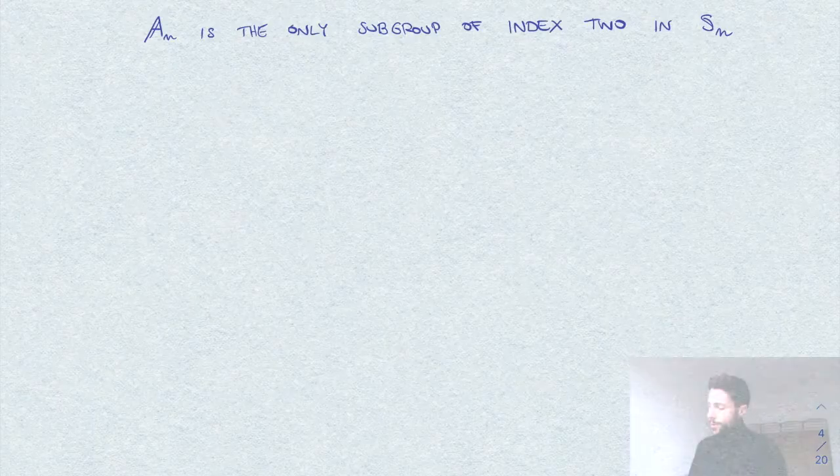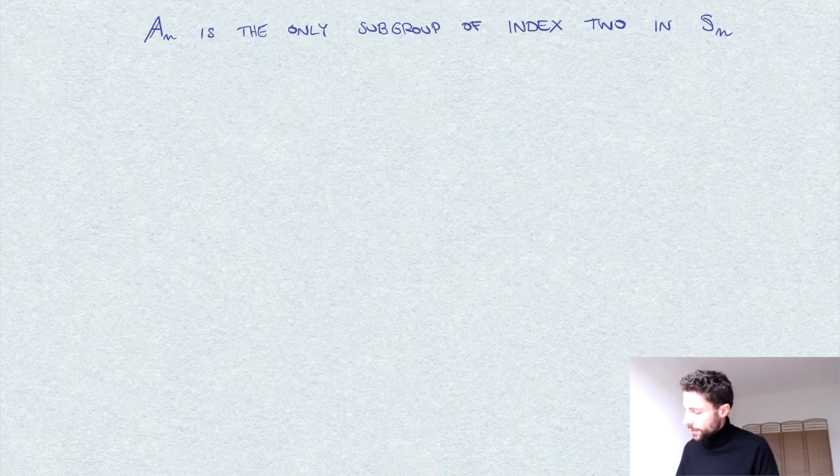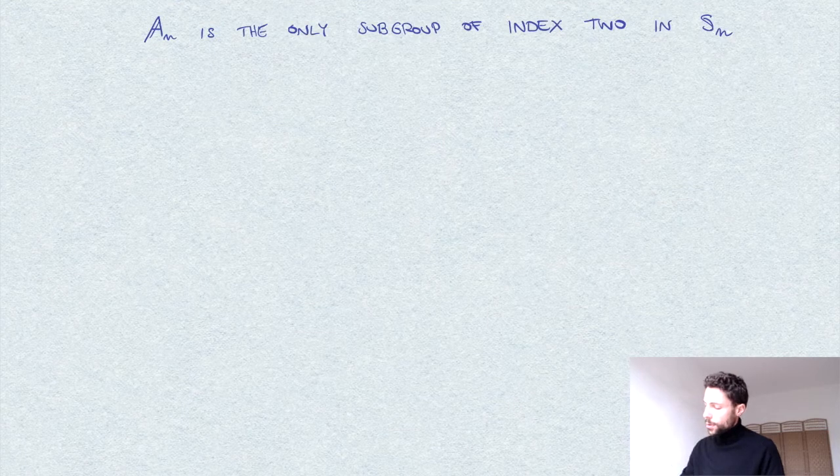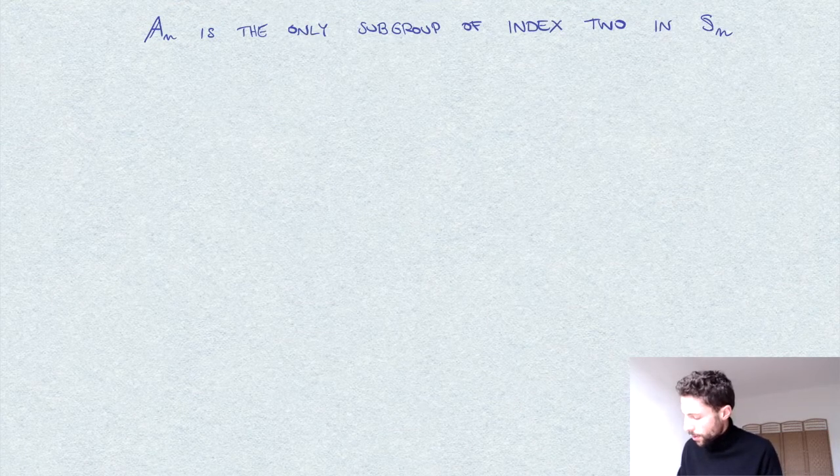Now I want to give two different proofs of the fact that the alternating group A_n is the only subgroup of S_n, or the symmetric group, of index two. There are no other index two subgroups. So here is a statement that we want to prove.